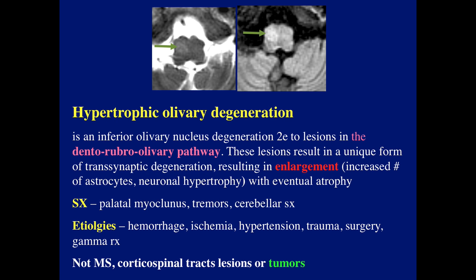Symptoms are usually palatal myoclonus, tremor, and cerebellar symptoms. Etiology is most commonly hemorrhages. It can also occur with ischemia, hypertension, trauma, surgery, and post-gamma knife treatment. It's definitely not MS, does not involve the corticospinal tract, and it's not a tumor.